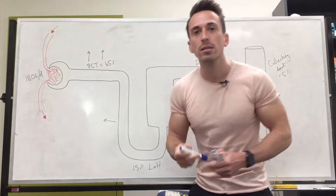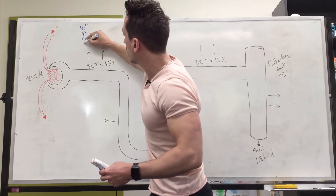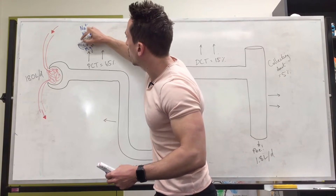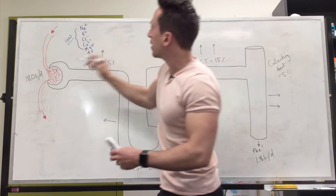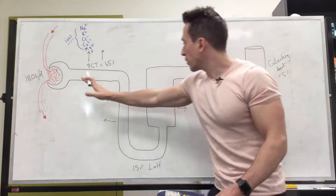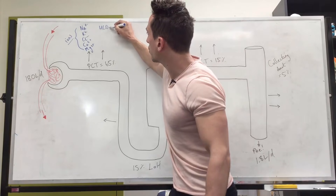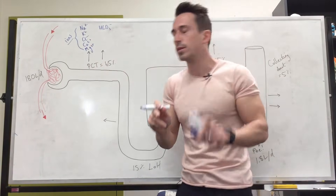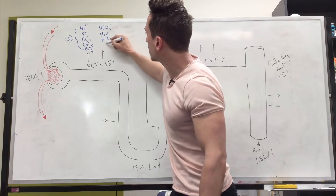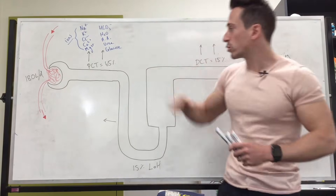So what's getting reabsorbed back into the body at the proximal convoluted tubule? Sodium ions, potassium ions, chloride ions, calcium ions, and magnesium ions — we'll just term these 'the ions.' In addition to these ions, bicarbonate is being reabsorbed — and while it is an ion, I'm keeping it separate for a particular reason. Also being reabsorbed here are water, amino acids, urea, and glucose. These are the main things being reabsorbed back into the body.